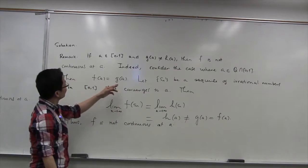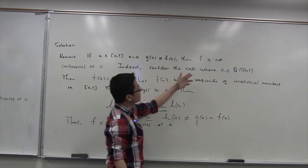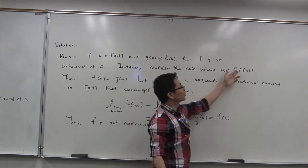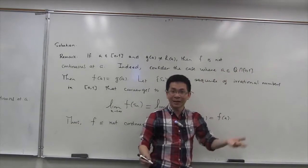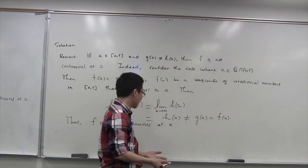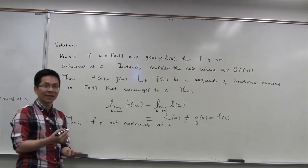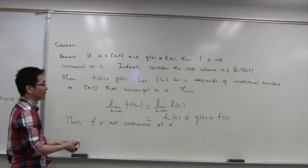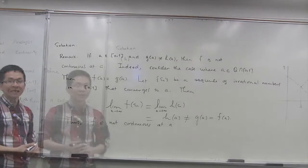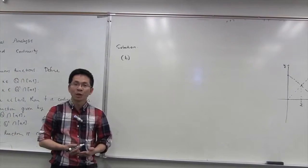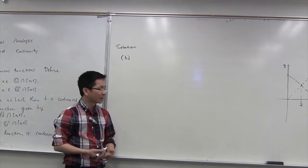Similarly, if a is an irrational number in [0,1], you can also show that f is not continuous at a by following a similar procedure. Now we are going to work on the second part of the problem.